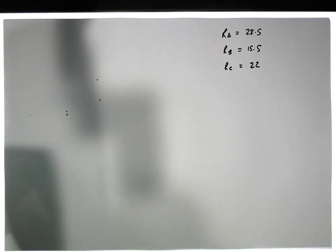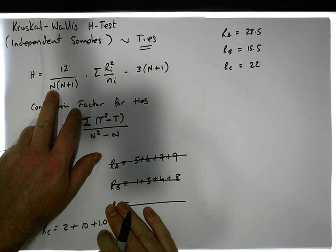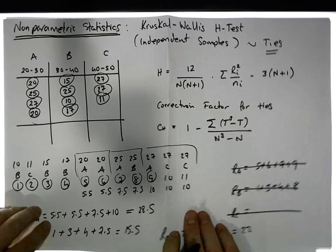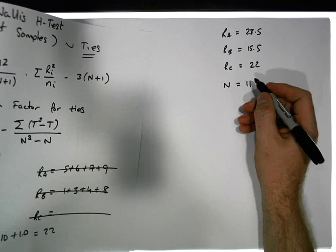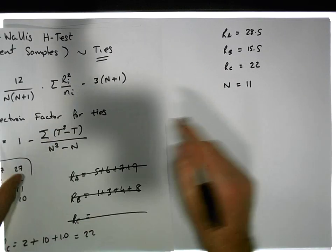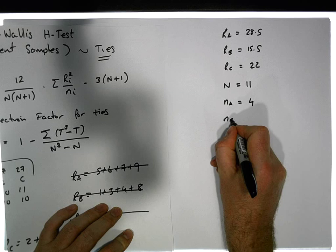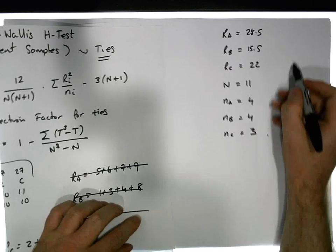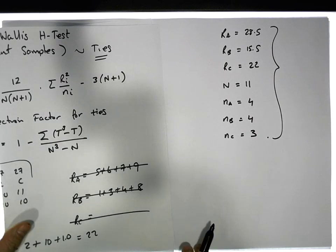We also need the sample sizes and the total number of observations. The total number of observations across all groups is 4 plus 4 plus 3, which gives N = 11. The sample size for group A is n_A = 4, n_B = 4, and n_C = 3. These are all the parameters we require.